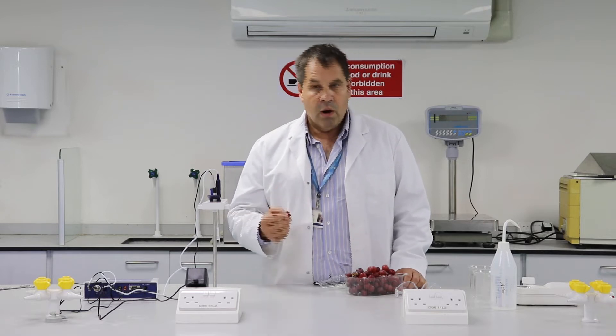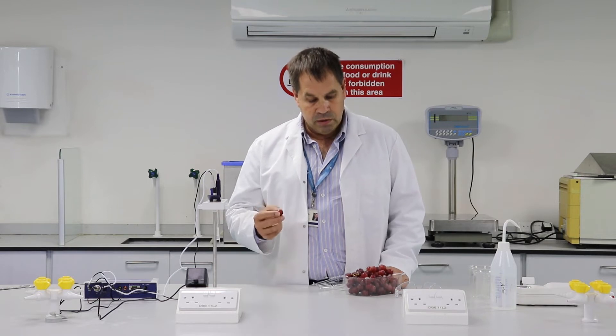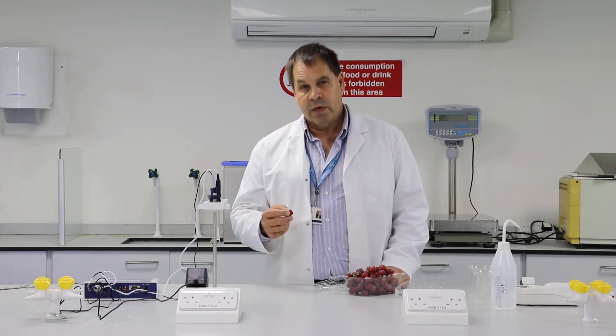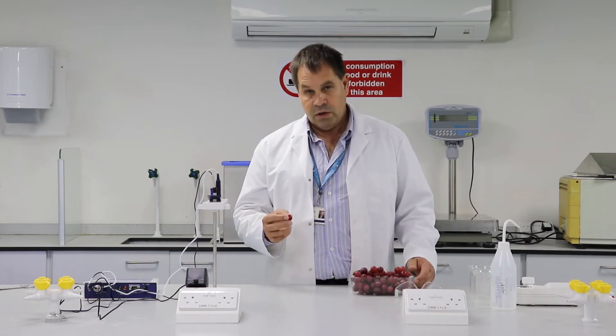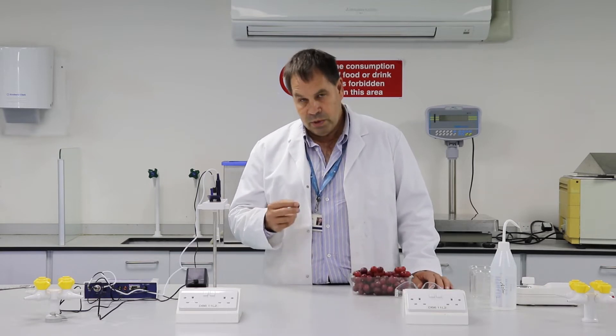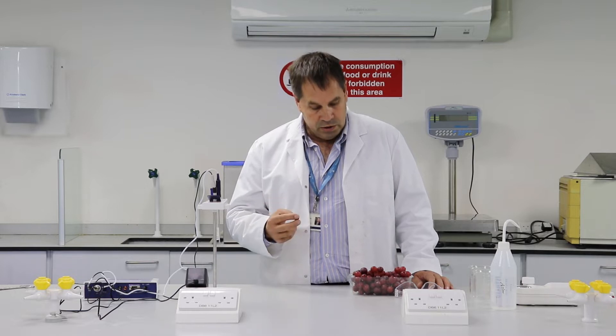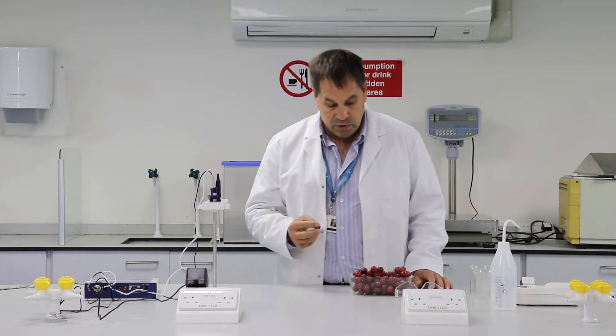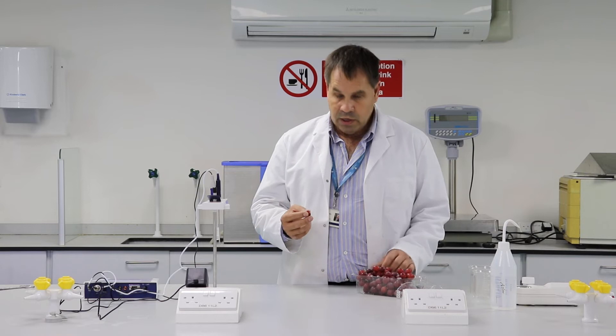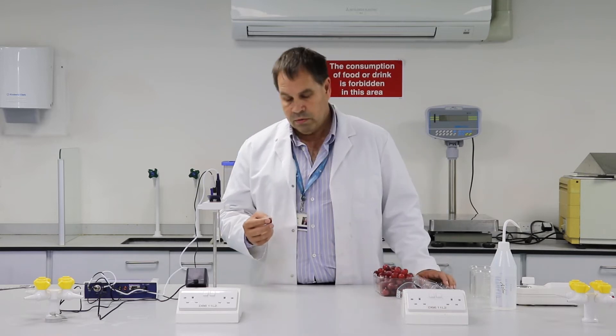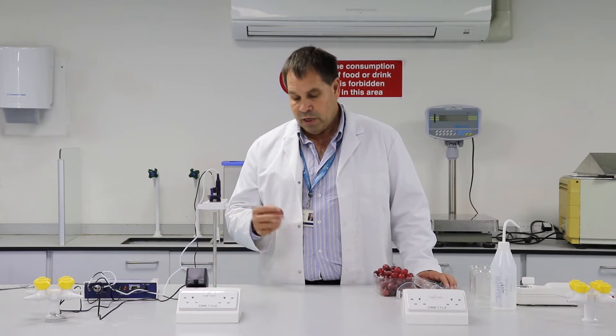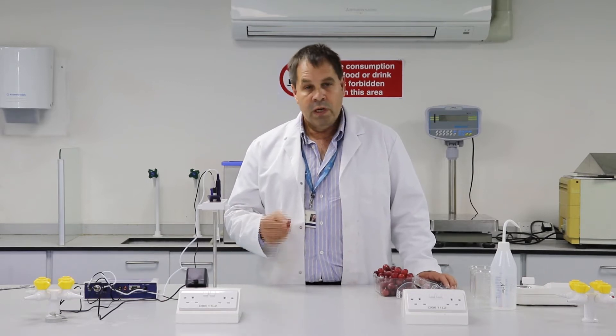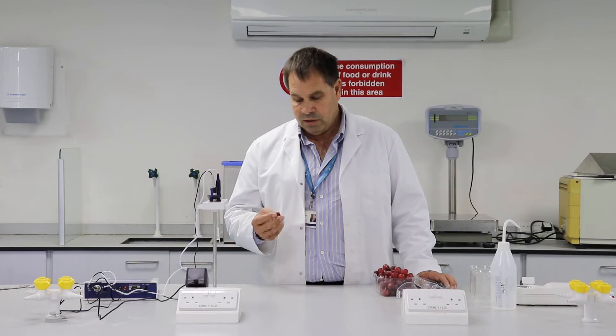When we make wine, there's a couple of really important things that we need to measure in the grape to make sure we make good wine. One of those is sugar. So grapes will contain sugar and remember that's what is a reward for the birds. But for us as winemakers, that sugar gets turned into alcohol. So yeast turns sugar into alcohol and that's how we make wine. The other really important component of a grape is acid.